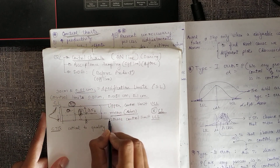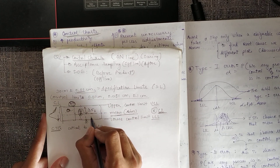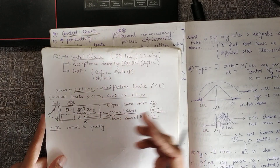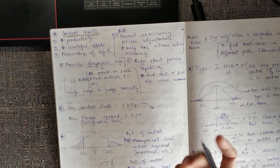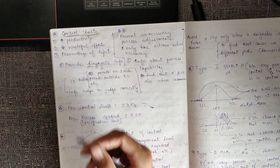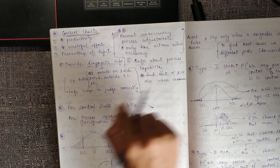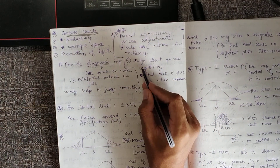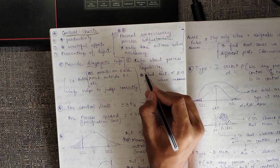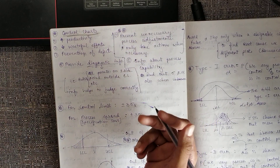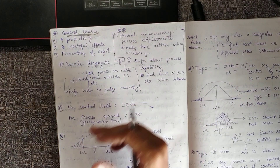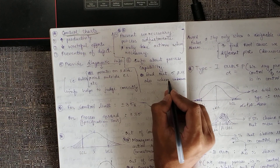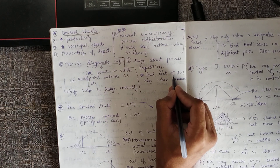Control charts also provide diagnostic information. Even if all points are inside the control limits, if they are all on one side of the mean, there are rules to apply to detect problems. We can correctly judge trends in our data points. Additionally, control charts give information about process capability — how capable our process is relative to the specification limits.